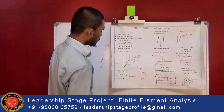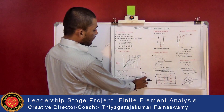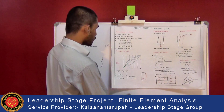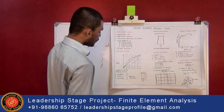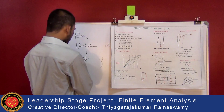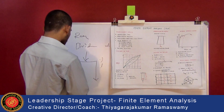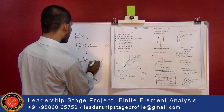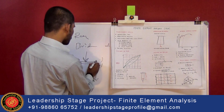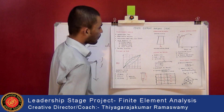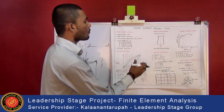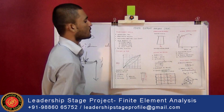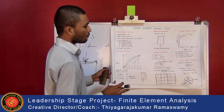Stress is nothing but the load divided by the area of the component. Strain is the change in length to the original length of the material. Stiffness is the rigidity of the element — that is, the deformation of the element. For example, a simply supported beam: when a load is applied over the top, it will deform. To minimize the discretization error, we can minimize the size of the element — that is, splitting the element into small sizes.